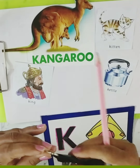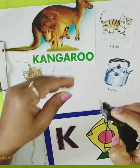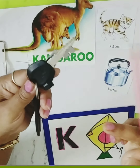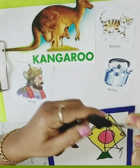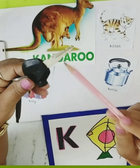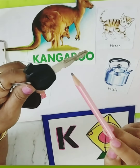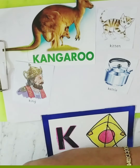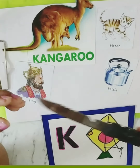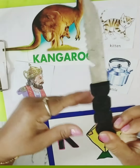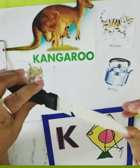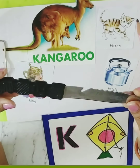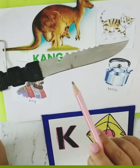Or dekho — mere paas maam ki. Aapke paas bhi chabi hogi na? Isko hum chabi bolte hain na, but isko English mein hum key bolte hain. So K for key. Kya hai yeh? Isko hum kya bolte hain? K for key. Now, or bhi ek chiz maam ke paas hai — yeh dekho. Isko hum knife bolte hain. Kya bolte hain? Knife. K for knife. Yaad rakhna hai aapko — K for knife.